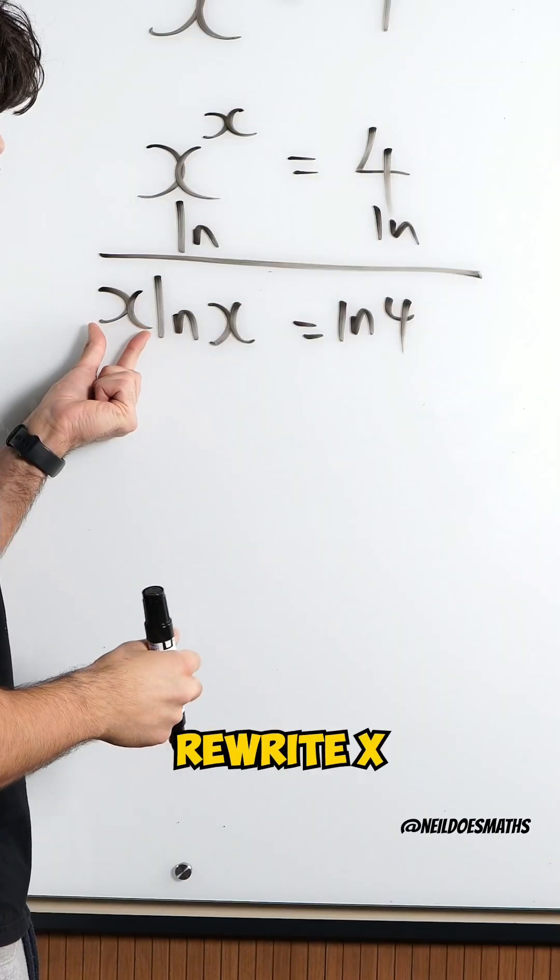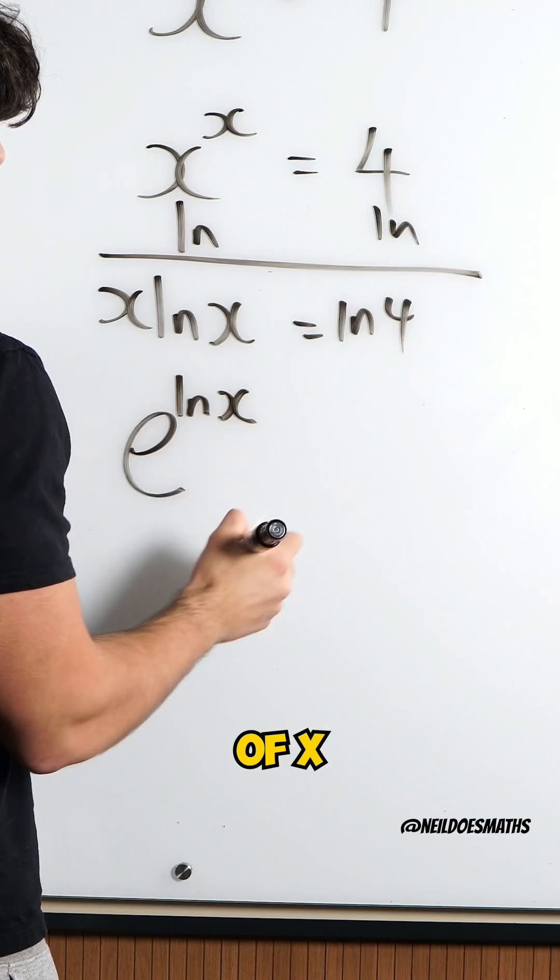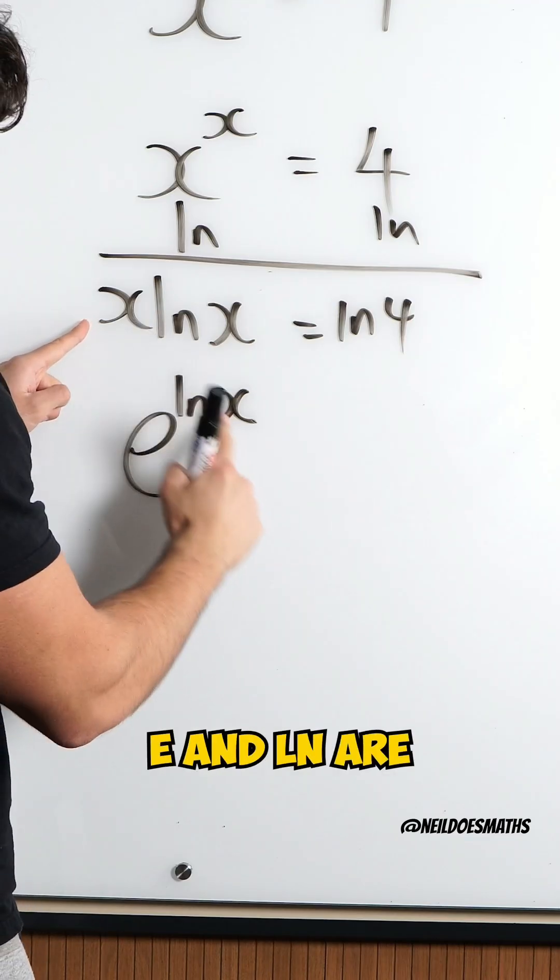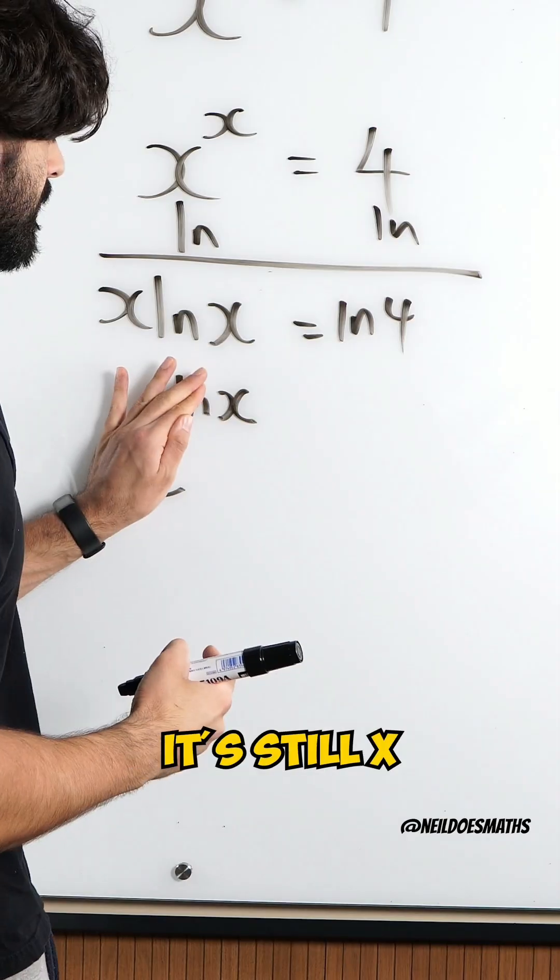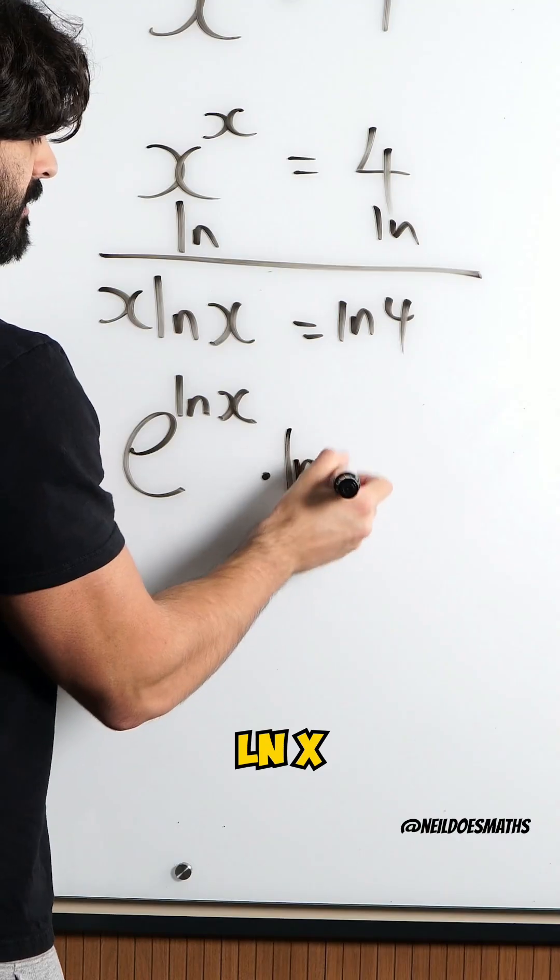I'm gonna rewrite x as e to the power of ln of x. Because e and ln are inverses of each other it's still x. But don't forget I have ln x down here.